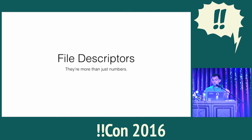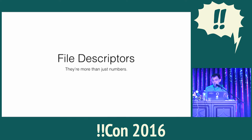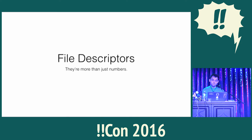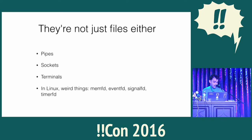A number alone doesn't carry a whole lot of information. It's just a handle to an entry in a table somewhere that holds the file descriptor state and all the other bookkeeping stuff that the operating system keeps for you. It's a primitive but simple API design — numbers are very easy to pass around, and the OS can easily retrieve state using that number as an offset. And they're not just files: they can be pipes, sockets, terminals, all sorts of weirdo stuff in Linux. Basically any kind of input and output on a Unix system goes through one.